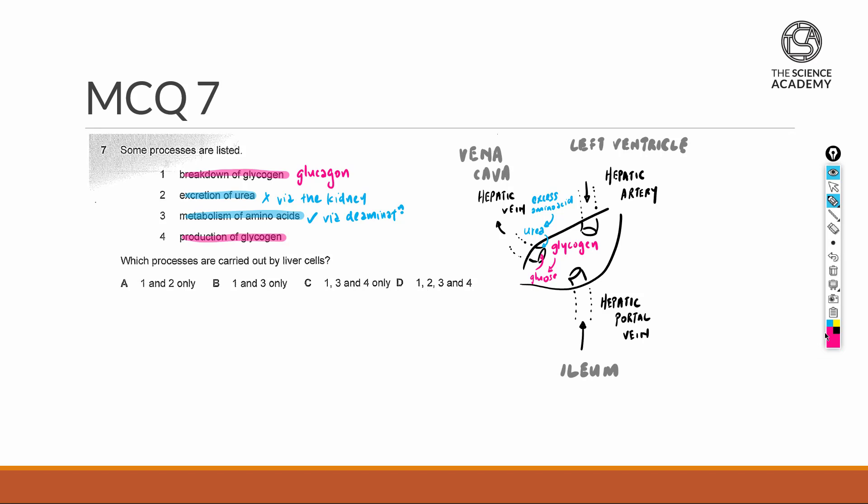Glucose from the ileum, based on absorption at the ileum, enters into the liver and the excess is converted into glycogen for storage. I'll say that option number four is correct, just like option number one.